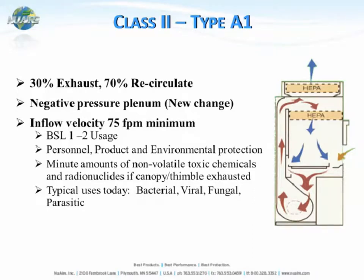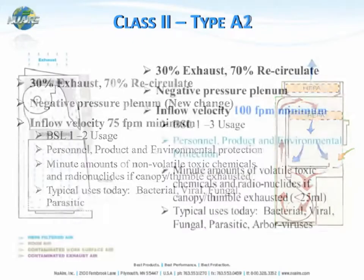The Class II Type A1 cabinet provides personnel, product, and environmental protection. Because it's only providing 75 feet per minute of inflow velocity, you can use it for minute amounts of non-volatile toxic chemicals if it is exhausted to the outside. A1 cabinets are not typically found very much in today's laboratories.